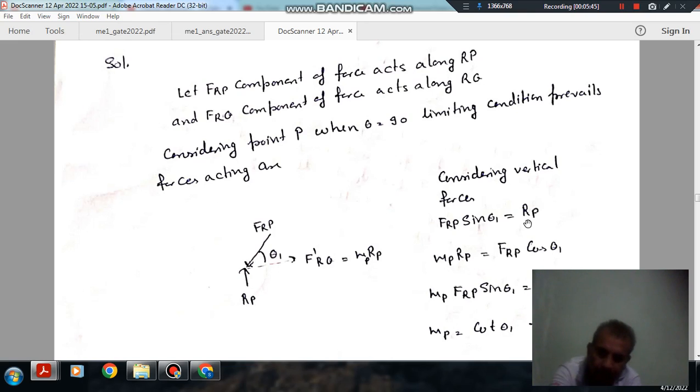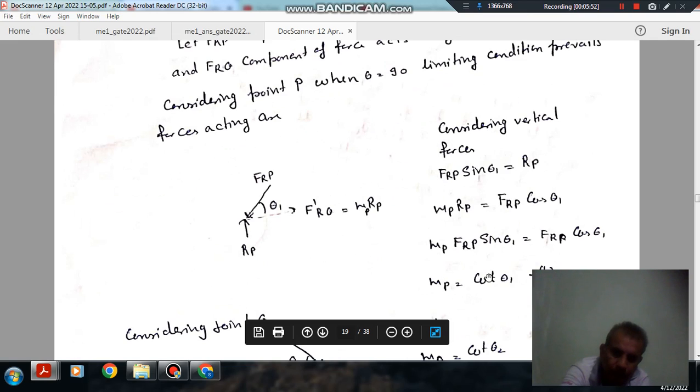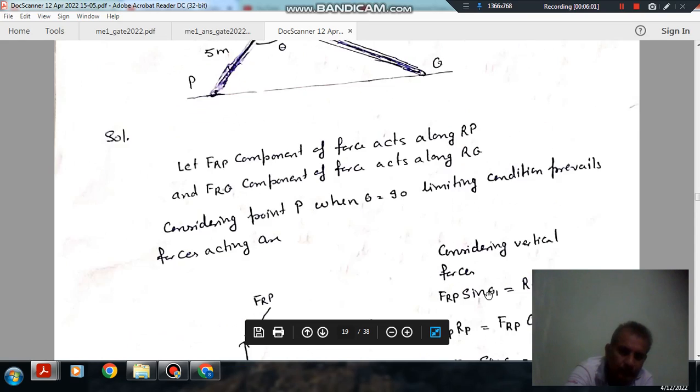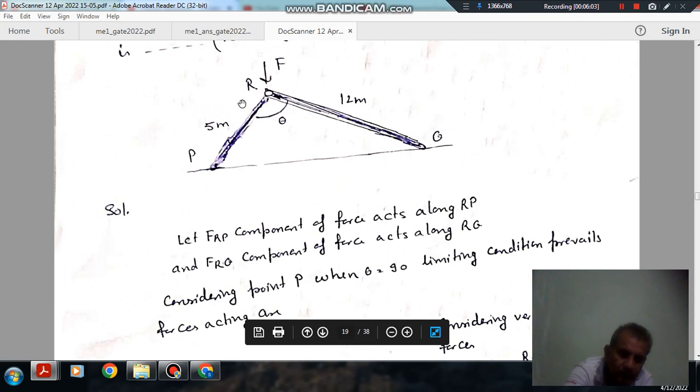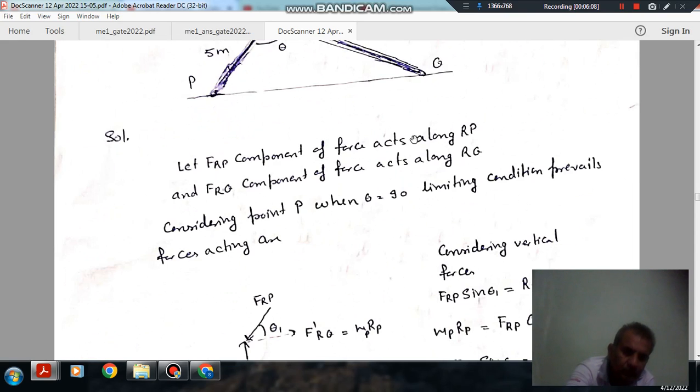R_P is F_RP by sin(theta1). From this we can put R_P and F_RP as sin(theta1), and R_P will cancel out. So mu_P is cot(theta1). So this is about this joint.